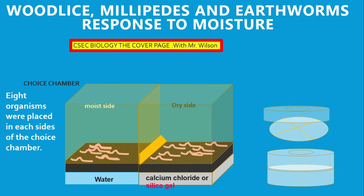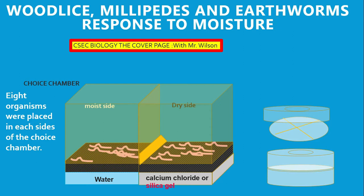The response of these organisms are usually the same. They are usually found in a particular habitat which is common to all three organisms. This experiment will summarize what happens when organisms are exposed to a dry condition and a moist condition.